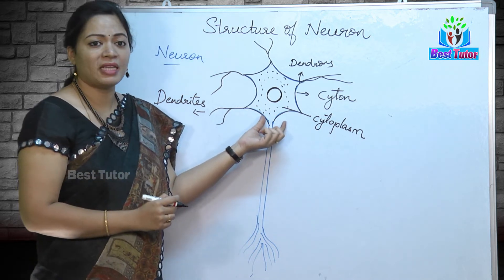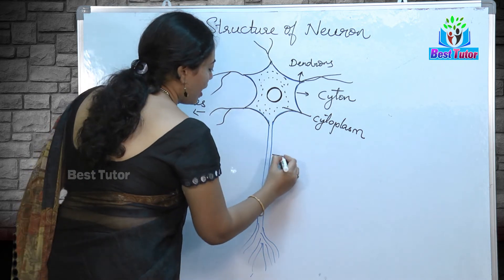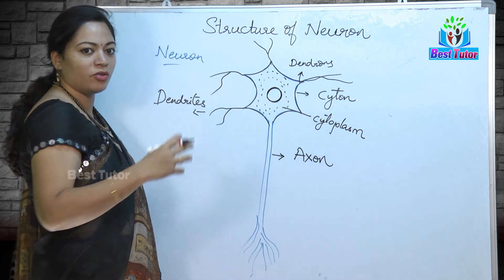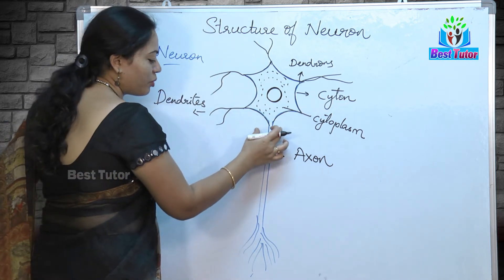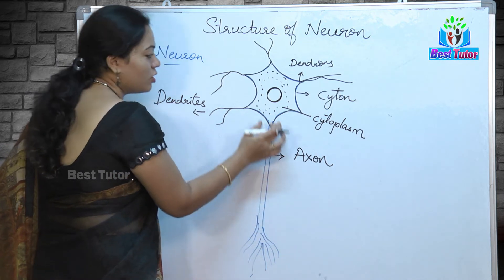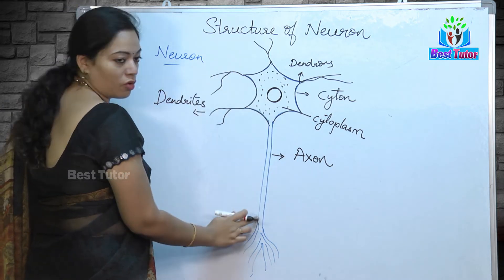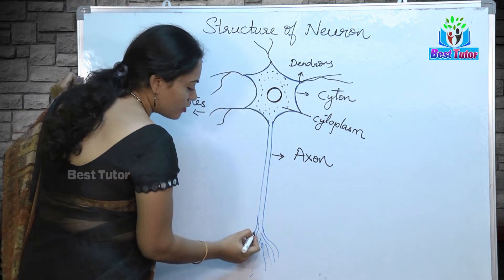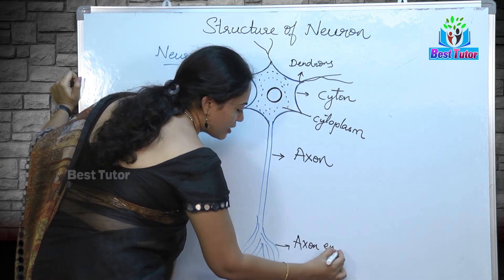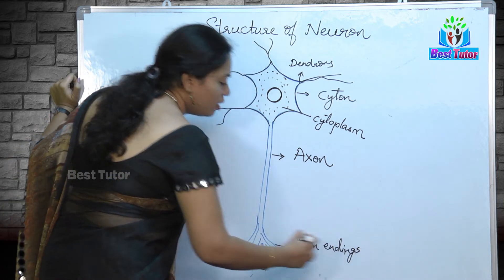One part of the cytoplasmic projection elongates like a tube-like structure — we call this part the axon. It looks something like an electrical cable. Whatever impulse is carried by the dendrites will be carried through this axon, and the axon ends with branching structures known as axon endings.